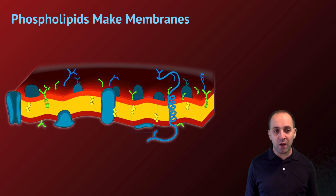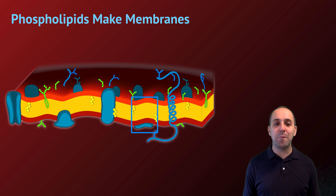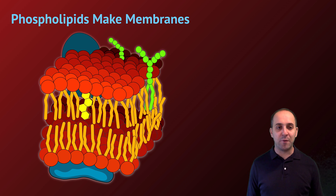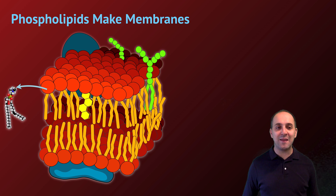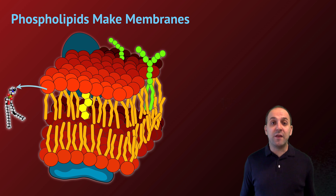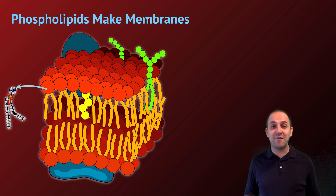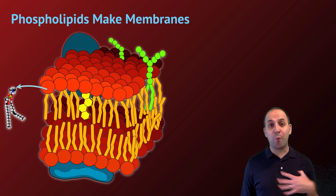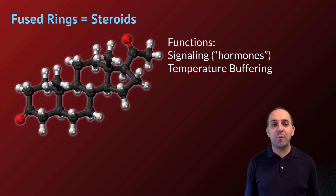Looking at a typical cell membrane, when we zoom into a small section we can see the individual phospholipids in cartoon form. The phosphate heads point outward into the aqueous environment surrounding or inside the cell, while the fatty acid tails point inward toward each other — this is the phospholipid bilayer. Because of phospholipids' amphipathic nature, this structure that is incredibly important for living systems can exist stably.